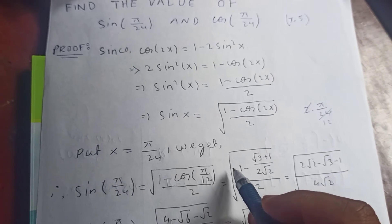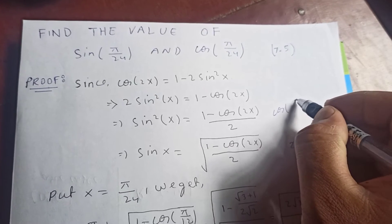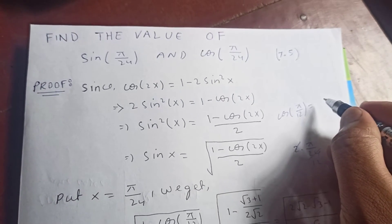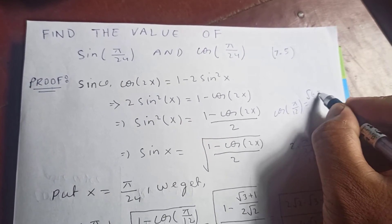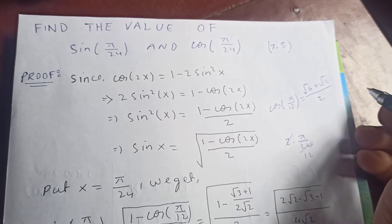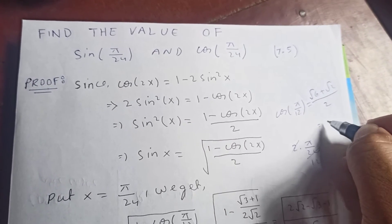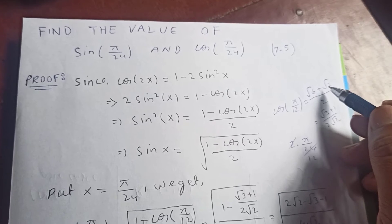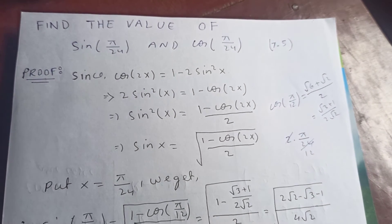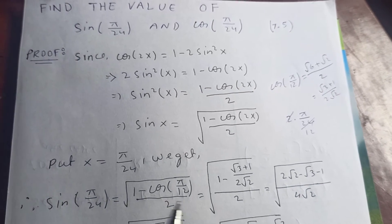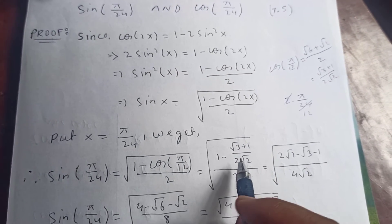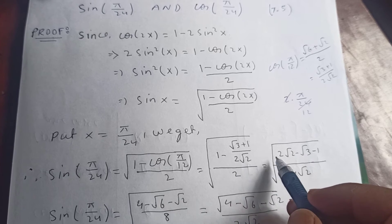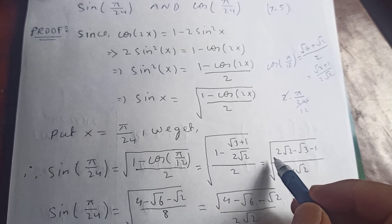And cos(π/12) — we have already evaluated this — is approximately (√6 + √2) / 4, which simplifies to (√3 + 1) / (2√2). Now substituting that value, we get 1 minus (√3 + 1) / (2√2), all over 2. Simplifying this gives (2√2 minus √3 minus 1) over (4√2).